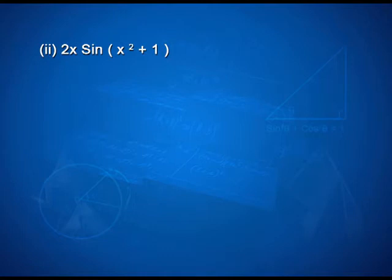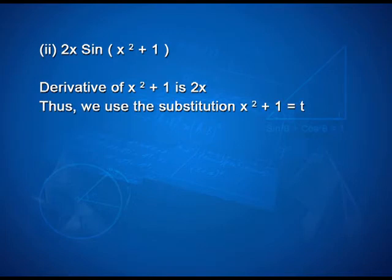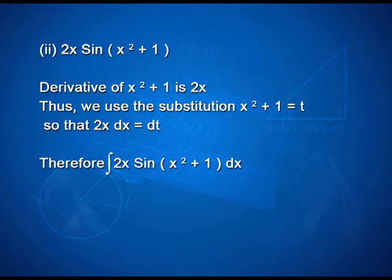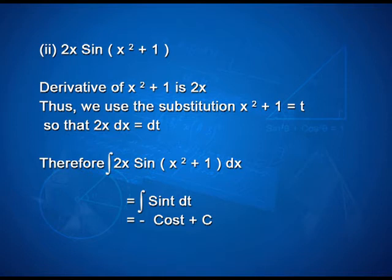For the second example, to integrate 2x sin(x² + 1), we find the derivative of x² + 1 as 2x. Thus, we use the substitution x² + 1 = t, so that 2x dx = dt. Therefore, integral of 2x sin(x² + 1) dx is equal to ∫sin t dt, that is equal to −cos t + c, which again can be written as −cos(x² + 1) + c.